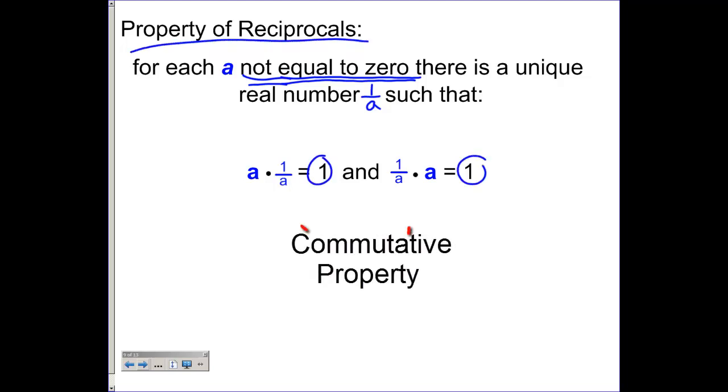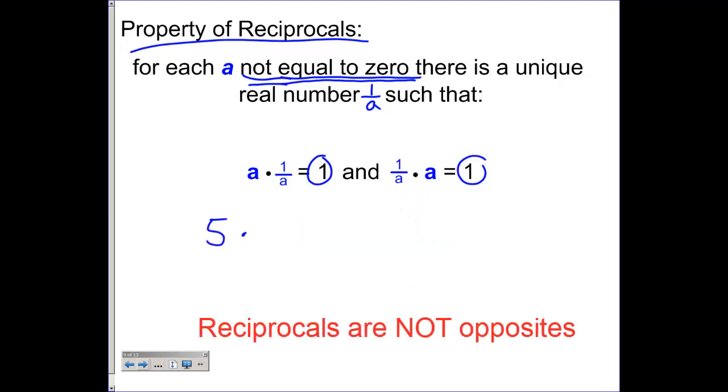So a number and its reciprocal are not opposite signs. They are the same signs. So let's say that a is 5. Then I times that by the reciprocal, which is 1 over 5. I will get a positive 1.